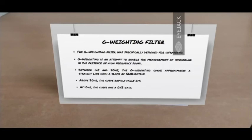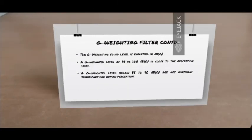Above 20 hertz is where we classify this as high frequency sound. The curve rapidly falls off. And the G weighting filter, the curve has a 0 dB gain at 10 hertz frequency. Now, it's not common for G weighting filter to be used, but when they are used, the sound level is expressed in dBG. A G-weighted level of 95 to 100 dBG is close to the perception level. Whereas, a G-weighted level below 85 to 90 are not normally significant for human perception.